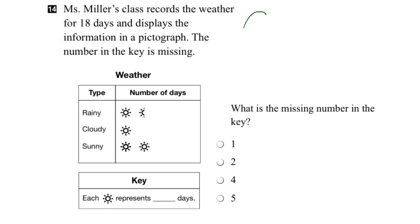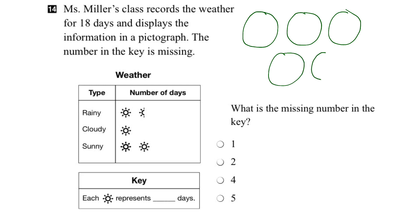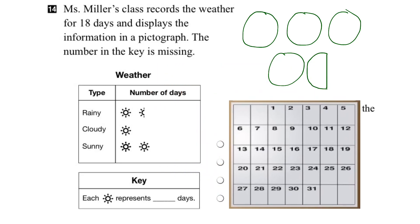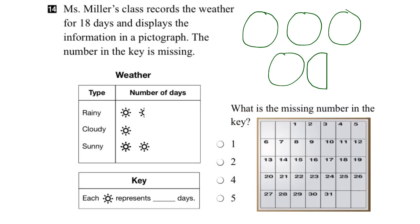Let me come over here and draw one, two, three, four, and then a half circle for those symbols. So all of these together make up the 18 days. Let's add in a calendar that we can use for reference, and I'll move it down to the corner.